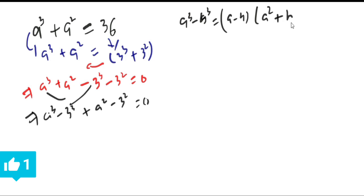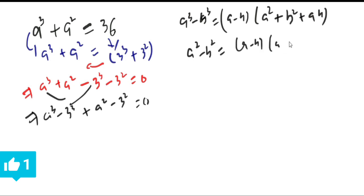And a² - b² is equal to (a - b)(a + b). From this we can take out the common factor (a - b), and the remaining terms are (a² + b² + ab)(a + b).